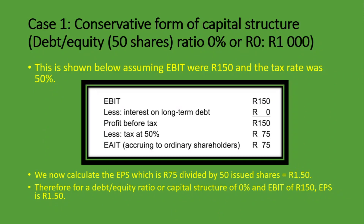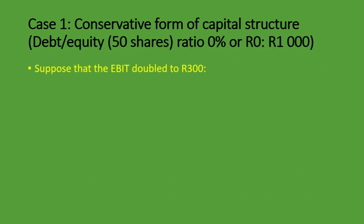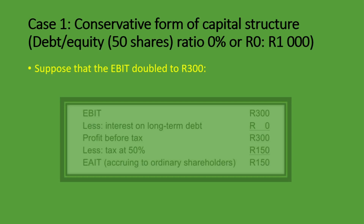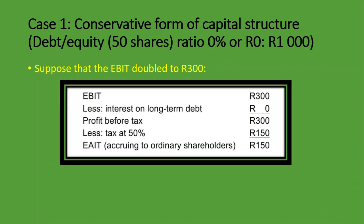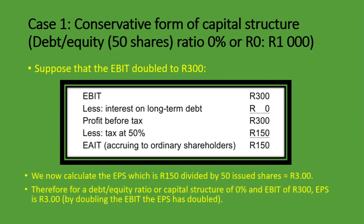Now let's look at the same example but where earnings before interest and tax doubles to R300. EBIT: R300. Less interest on long-term debt: zero. Profit before tax: R300. Less tax at 50%: R150. Earnings after interest and tax: R150, shared among ordinary shareholders. Earnings per share is R150 divided by 50 issued shares, which equals R3. Therefore, for a capital structure of 0% debt and EBIT of R300, earnings per share is R3. By doubling the EBIT, the earnings per share has doubled. This is the situation where we have no debt at all.